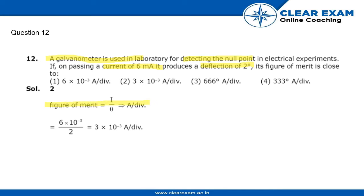The formula is i by theta (i/θ). We just have to put the values - our current value i is 6 milliampere, so we put 6 × 10^-3, and our value of theta is 2 degrees. So we get 3 × 10^-3 ampere per division.